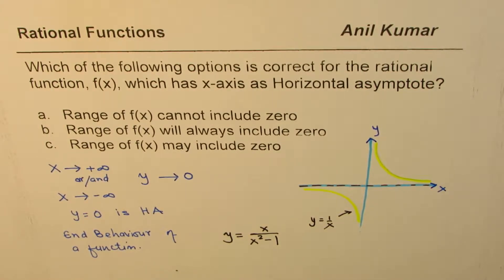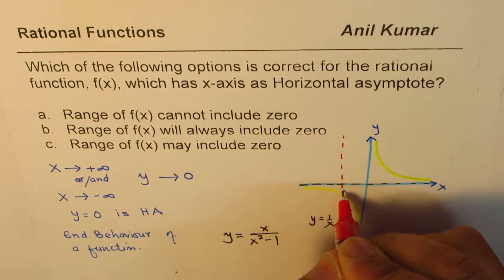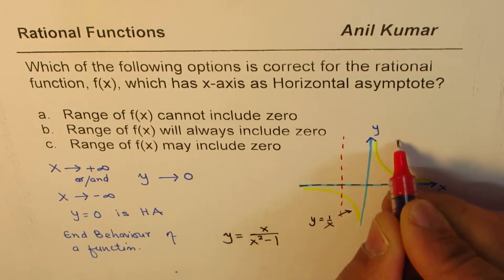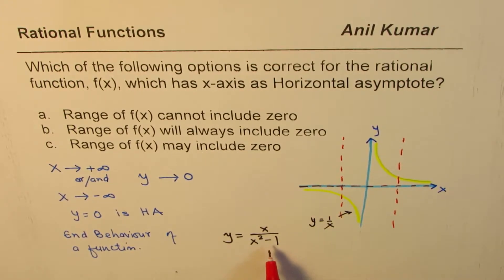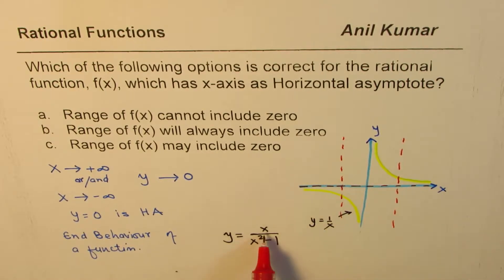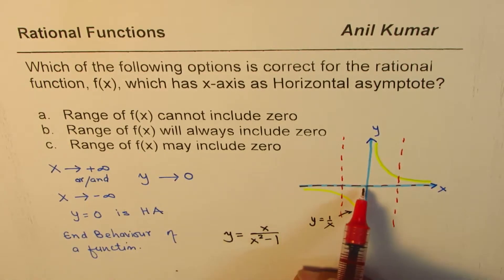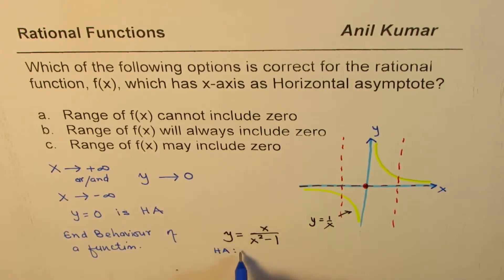For the function y equals x over x squared minus 1, x squared minus 1 means we have vertical asymptotes at plus or minus 1. If we take some values and sketch it, we find that when x equals zero, y equals zero. So zero is within the range.